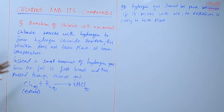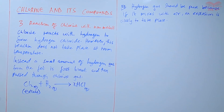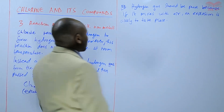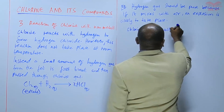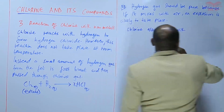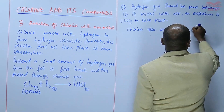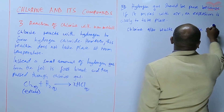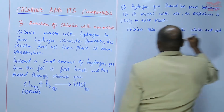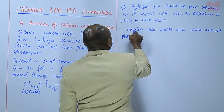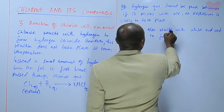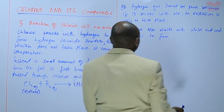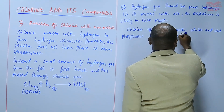That is one of the non-metals that reacts with chlorine. Chlorine also reacts with phosphorus — both white and red phosphorus — to form phosphorus chlorides.